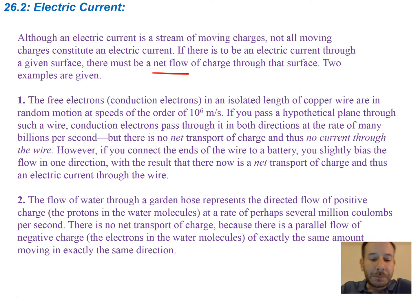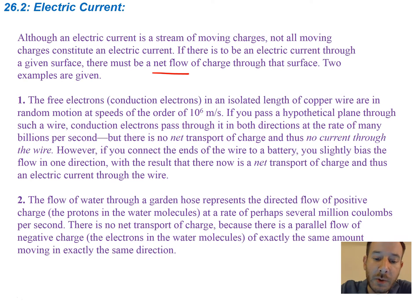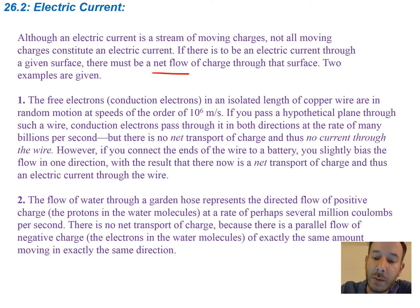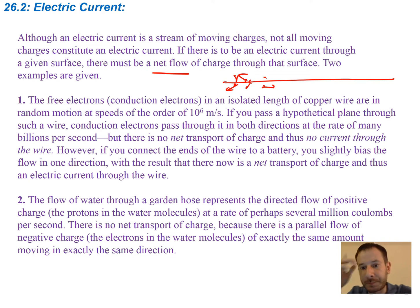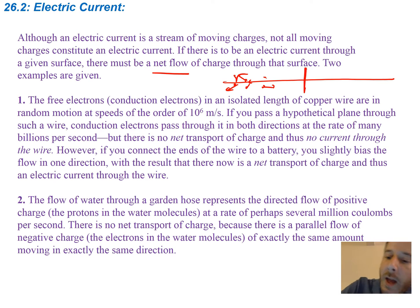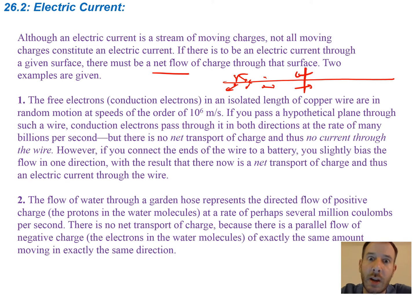Two examples are given. The free electrons, which are conduction electrons — those are the electrons moving around in a conductor — in an isolated length of copper wire are in random motion at speeds of the order of 10 to the 6 meters per second, which is very fast. If you pass a hypothetical plane through such a wire, conduction electrons pass through it in both directions at the rate of many billions per second. If this is our wire, these electrons are going this way, that way, all over the place. If you pass a plane through here, you have many electrons going in each direction and they balance each other out, so the net charge is roughly zero.